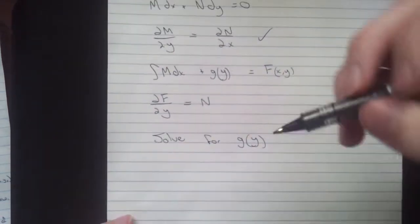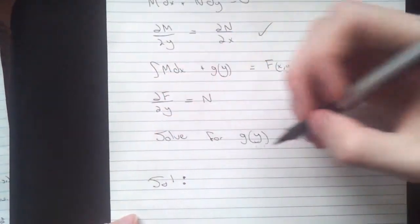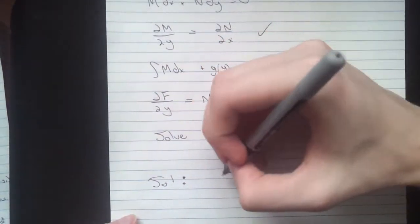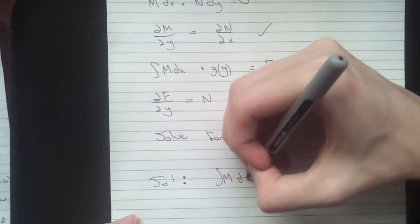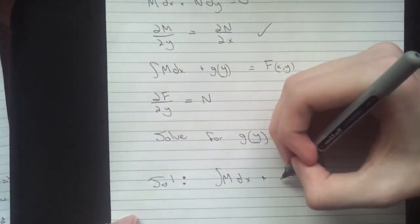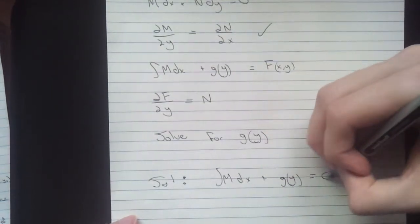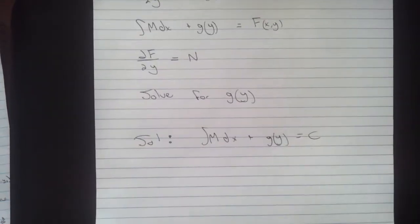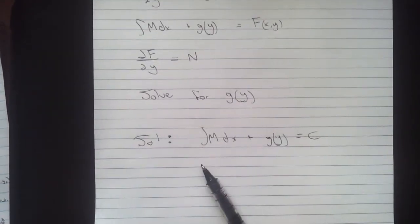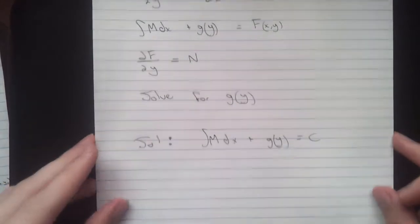Your final solution just looks like this. Original integral of M dx plus g of y equals c. And that's about it. It's pretty simple. Key note, the solution is not a y equals equation.